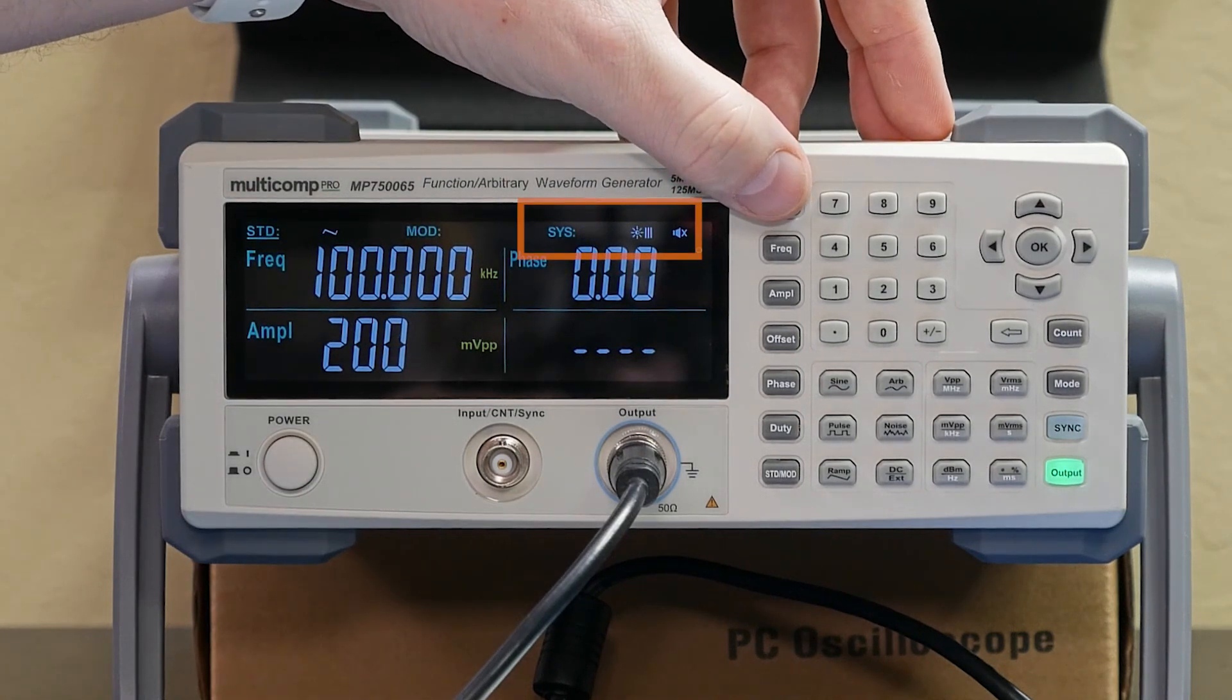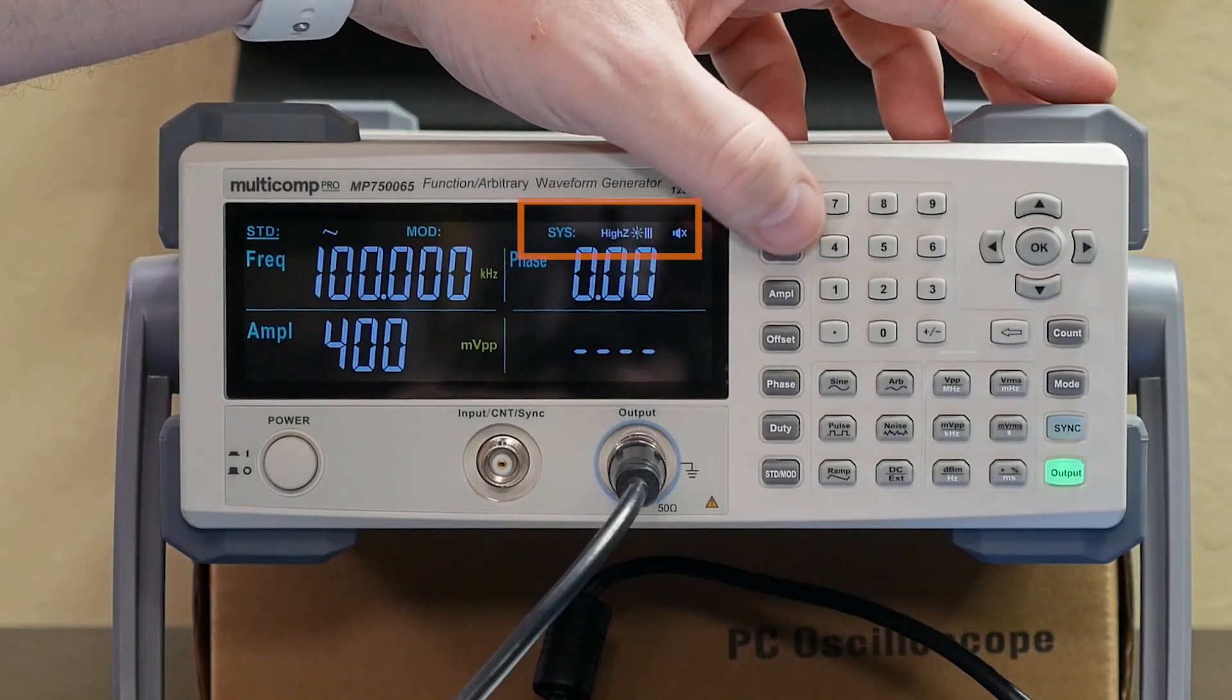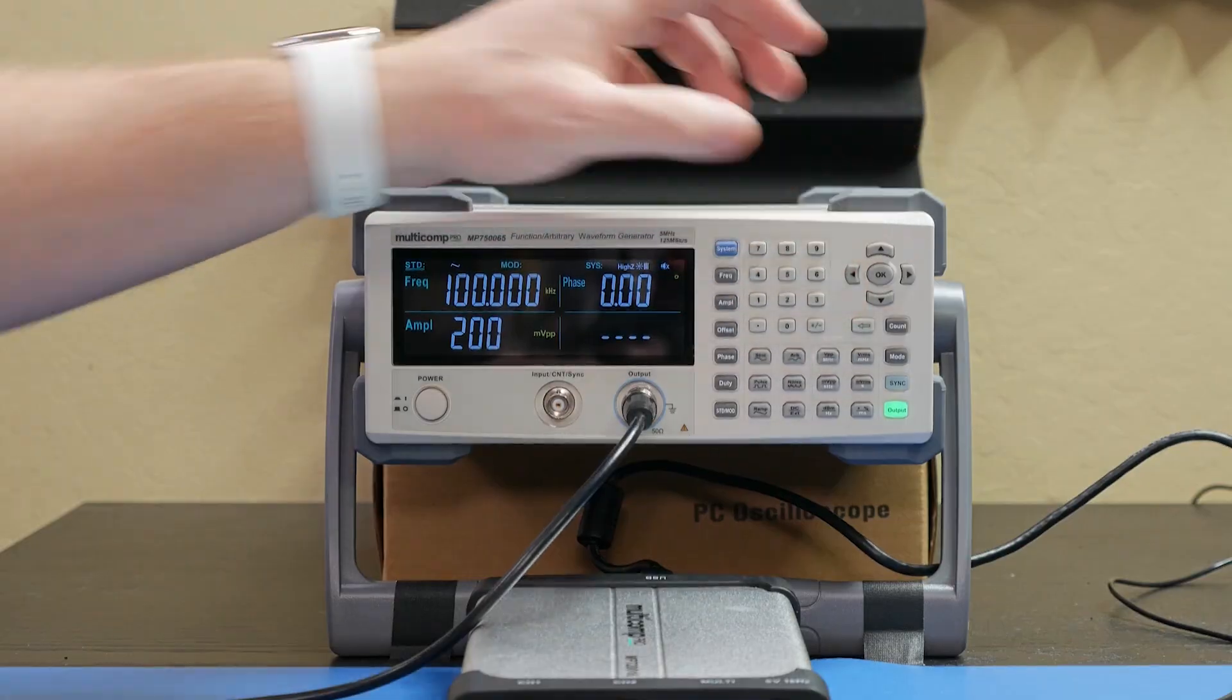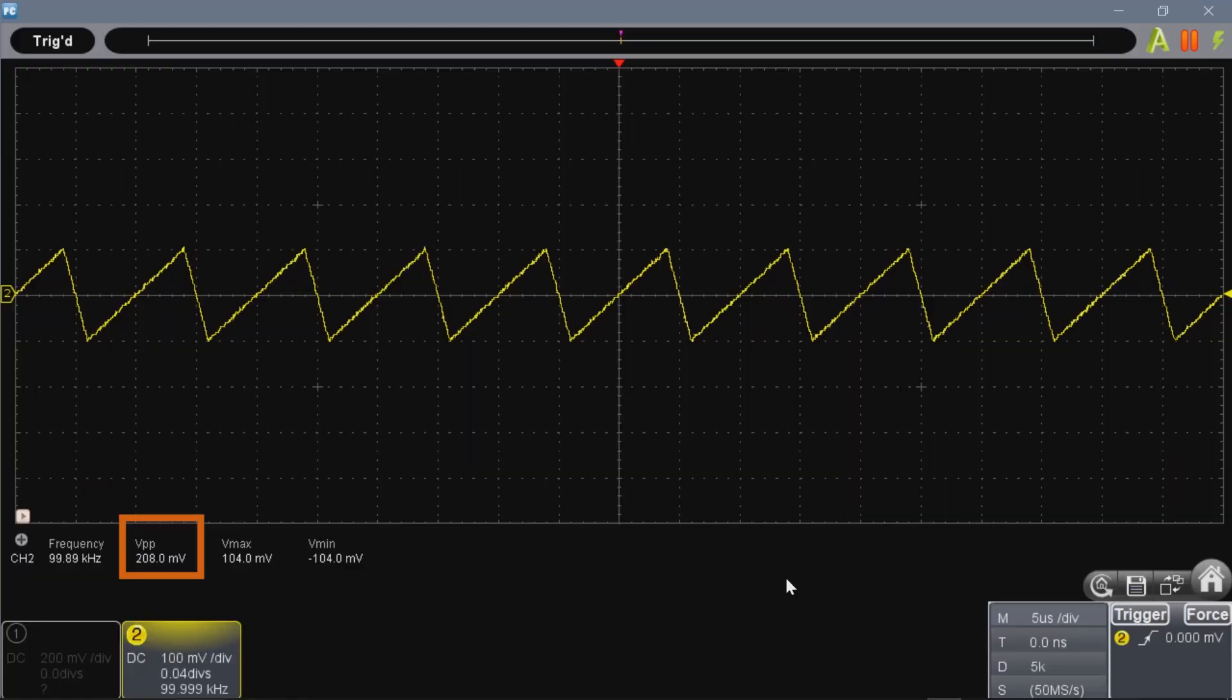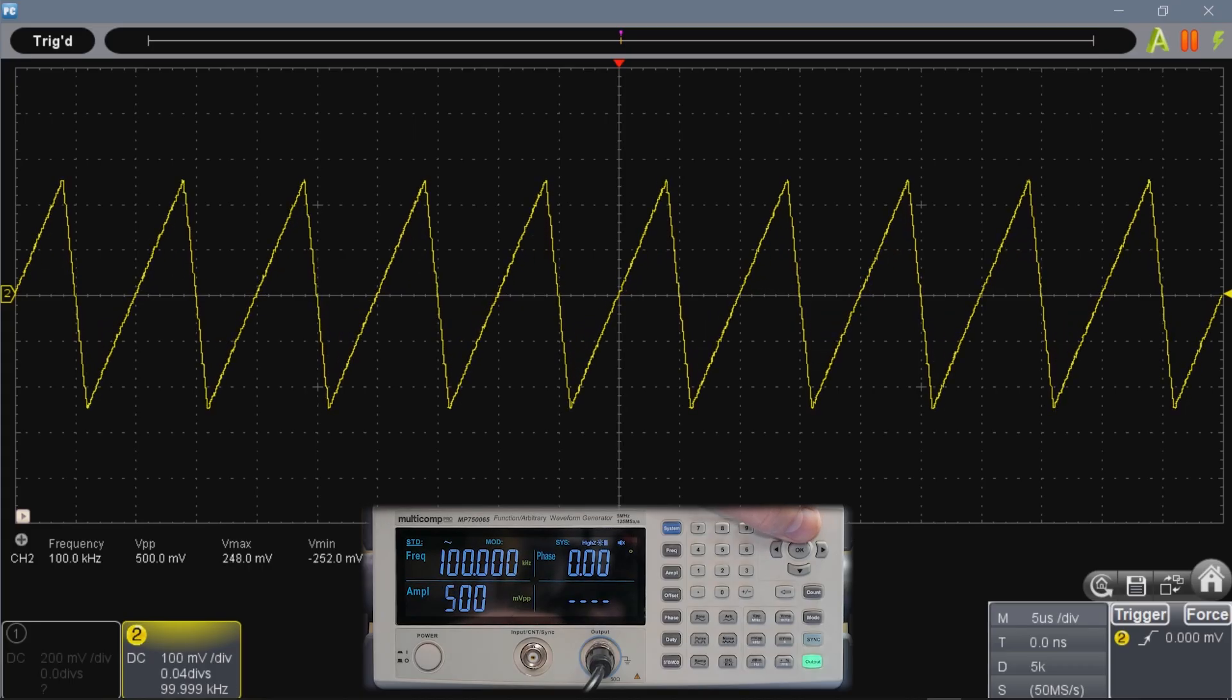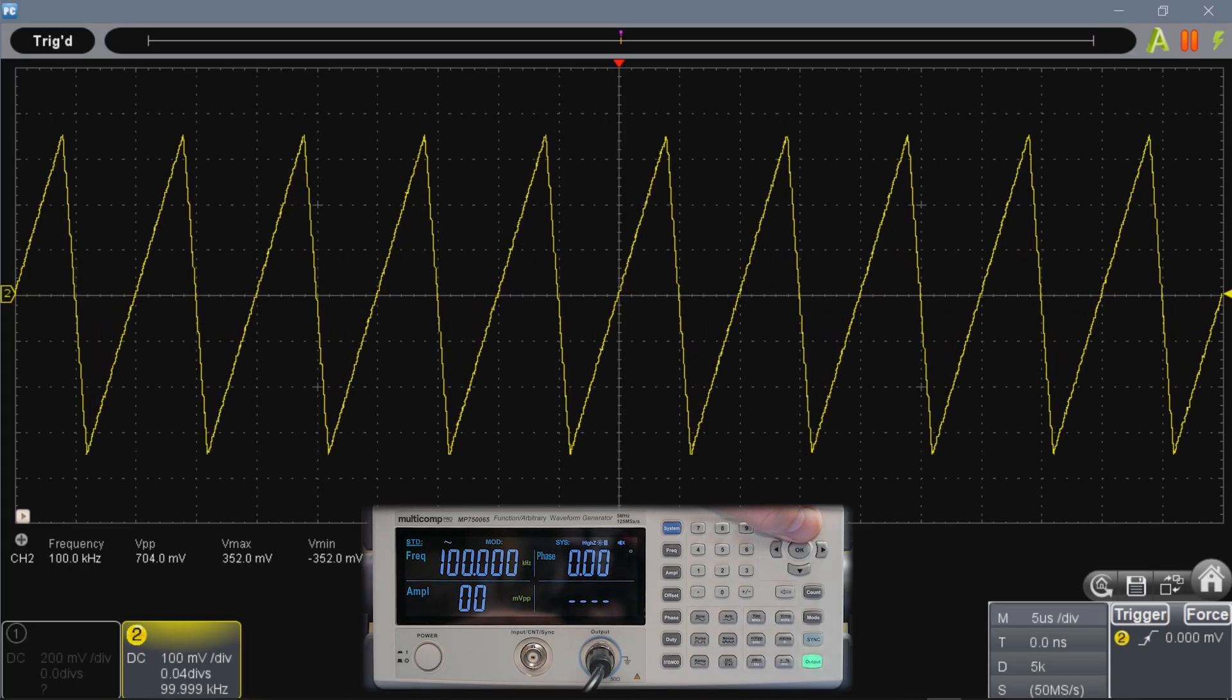Now, if you're not sure what to set your generator's impedance to, make sure it is set to high. With that, a 200 millivolt peak to peak amplitude looks correct on the scope. Okay, now as I increase the output to 800 millivolts peak to peak, the waveform's amplitude also increases.